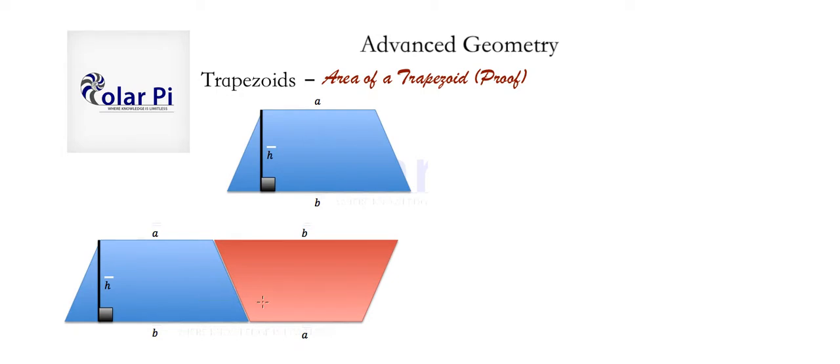So then once you've done this, what you end up with put together has got to be able to form a parallelogram. So the only assumption in this proof is that we know the area of a parallelogram and how to calculate it. And of course we do, right?